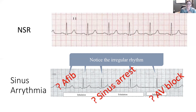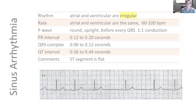But is this sinus arrhythmia, or could it be atrial fibrillation? Could it be a sinus arrest, or maybe an AV block? We need to do our eight steps to find out, so let's look at those parameters next.